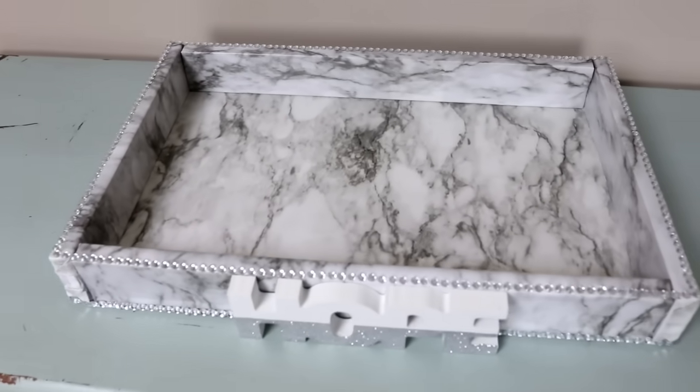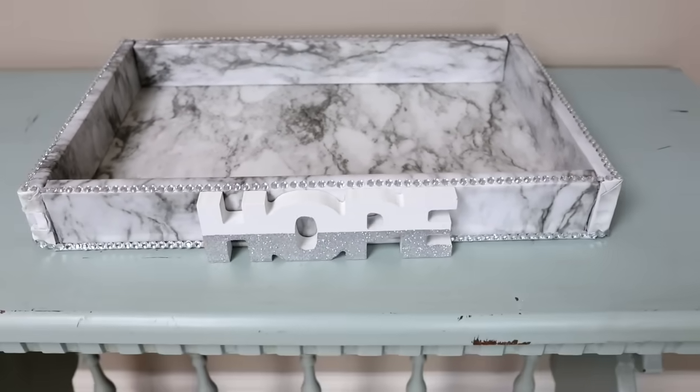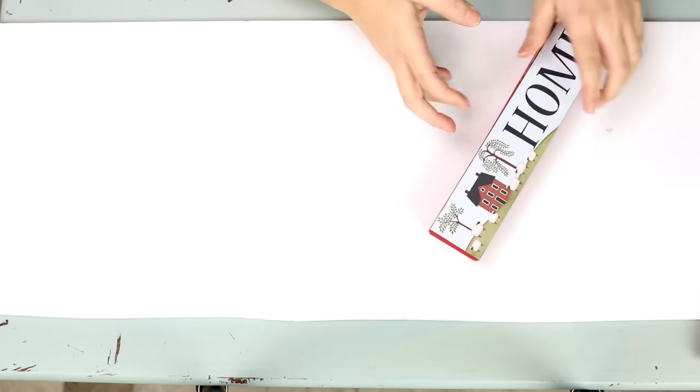The next project we're going to do is this really cute hope tray that I put together. So what you're going to need is a piece of foam board. I just used leftovers that I had on hand.